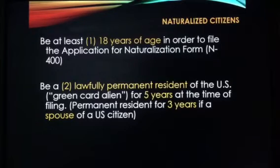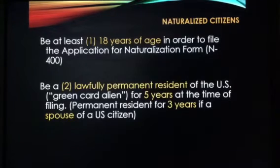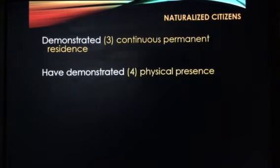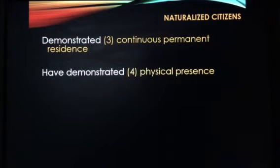If you are married to a U.S. citizen, you can apply for citizenship after three years. Marriage to a U.S. citizen does not grant you citizenship, but it does reduce the amount of time you must live in the country before applying. Third, you must demonstrate continuous permanent residence — five years, uninterrupted. You cannot live here two years, go to another country for a year, come back for three years, and then apply. You must demonstrate physical presence, perhaps through a letter from your employer, cable bills, or utility bills.